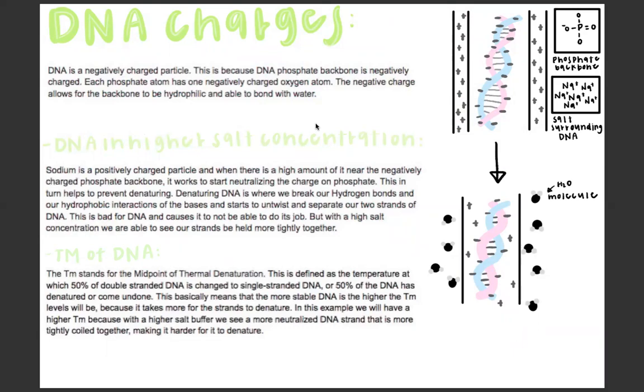Sodium is a positively charged particle and when there is a high amount of it near a negatively charged phosphate backbone it starts to work to neutralize the charge on our phosphate. This in turn helps prevent denaturing and unwinding of DNA, but with a high salt concentration we are able to see our strands be held more tightly together. The neutral charge makes DNA less hydrophilic and soluble in water. This image tries to show how DNA strands seem to be more neutralized now because of the high salt concentration and is now more hydrophobic and resisting all water molecules around it.